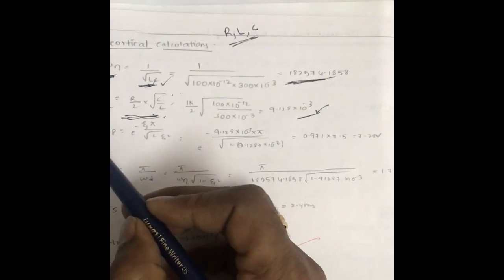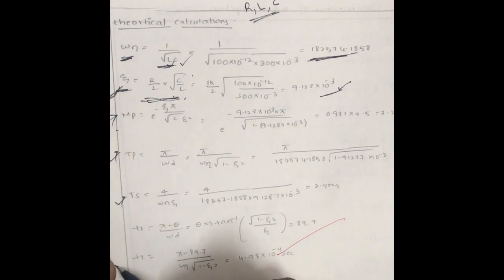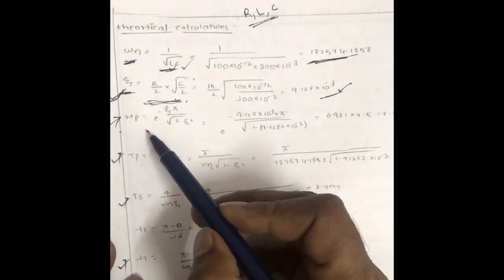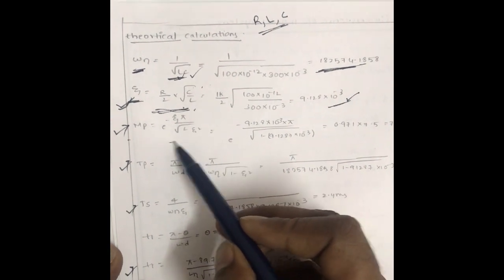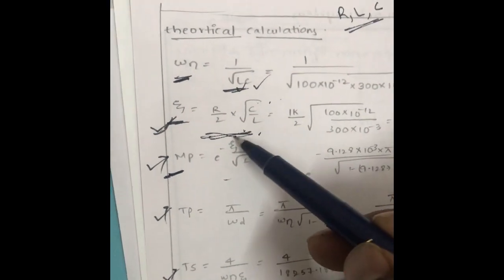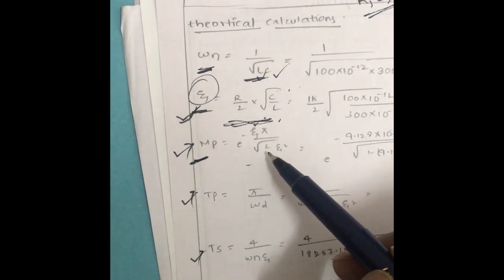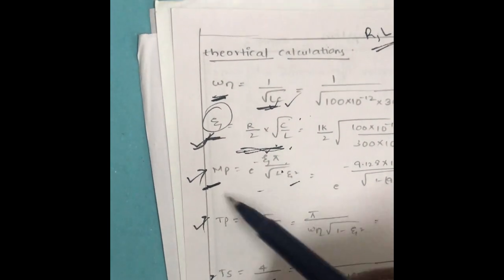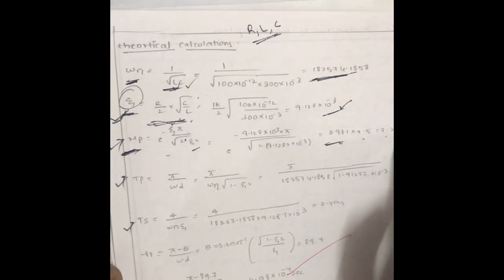Similarly, the formula for maximum peak overshoot is e^(−ζπ / √(1−ζ²)). We know the ζ value, so substituting gives MP = 0.97 × 7.5 = 7.28 volts. For peak time, the formula is π/ωd, where ωd = ωn × √(1−ζ²). Substituting these values gives the theoretical peak time.